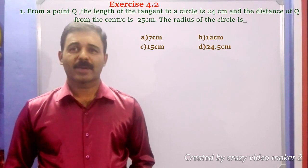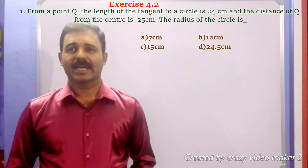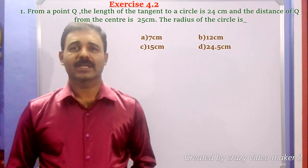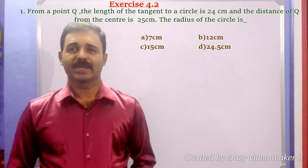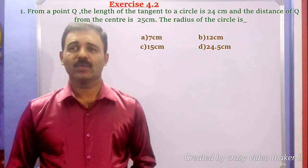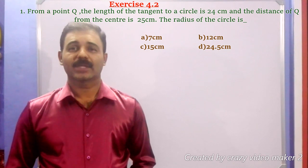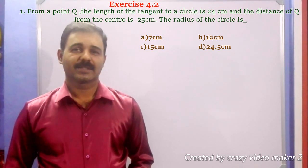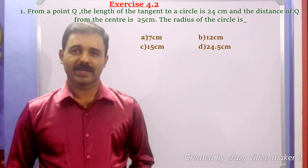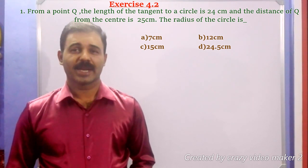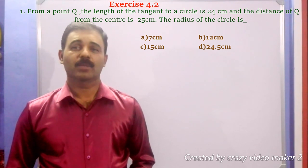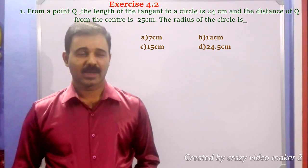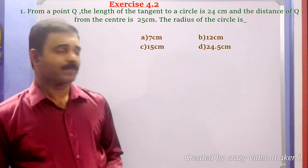Taking the first problem: from a point Q, the length of the tangent to a circle is 24 cm and the distance of Q from the center is 25 cm. The radius of the circle is — given four options: option A, 7 cm; option B, 12 cm; option C, 15 cm; and option D, 24.5 cm. Now, first find the answer.